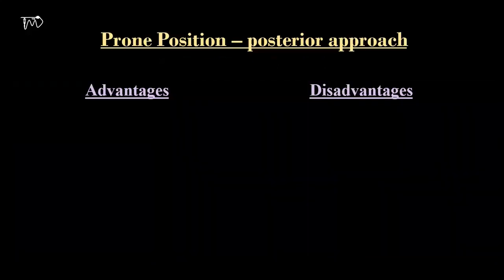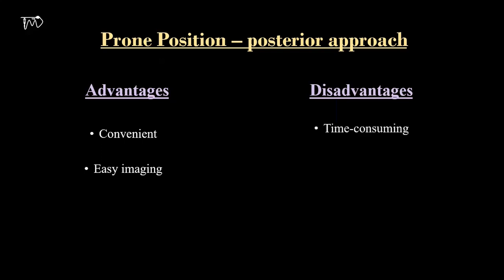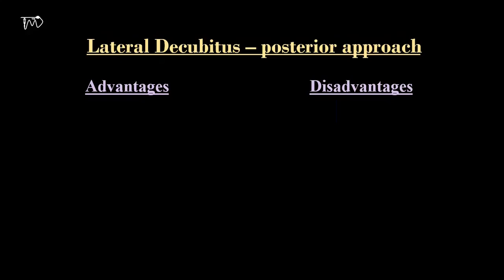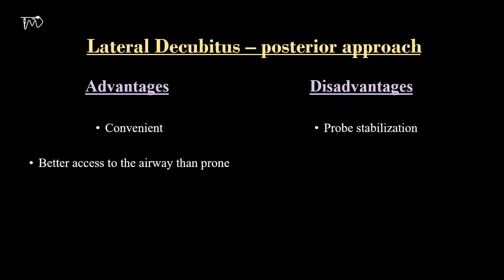In prone position, it is easy to get an optimized image of the sciatic nerve in the popliteal region and it is convenient for the anesthesiologist. But it is time consuming, requires assistance to make the patient prone and then supine again after the block. Also, there is a risk of airway compromise, especially in sedated patients. Lateral decubitus gives better airway access compared to prone position, but technical issues like transducer stabilization and image optimization remain, and it also needs assistance to change the patient's position.